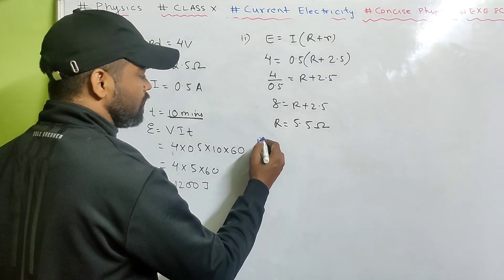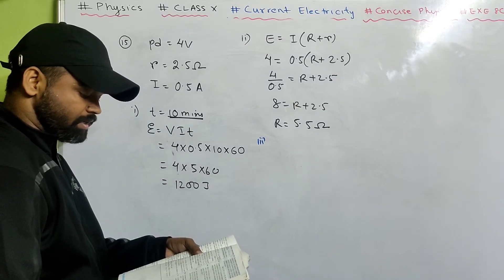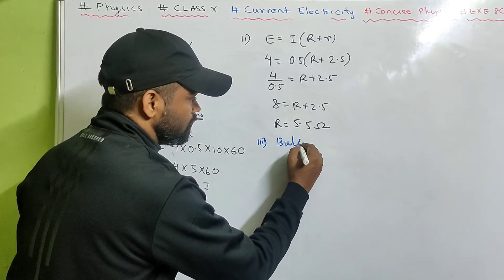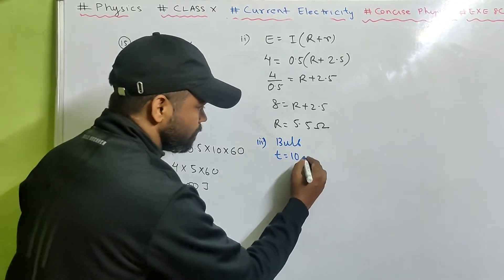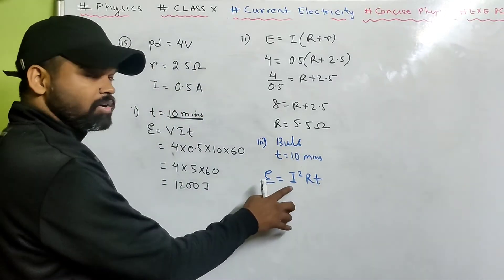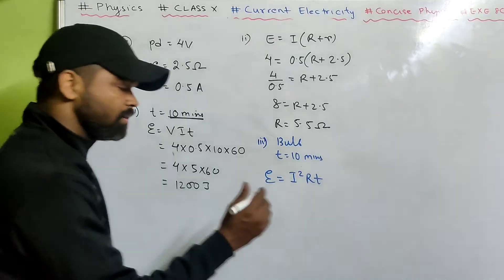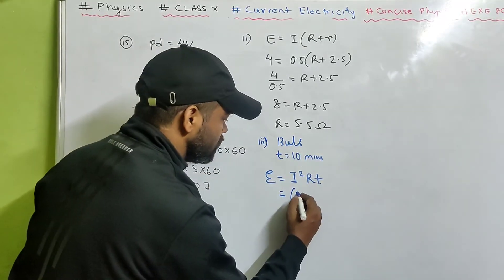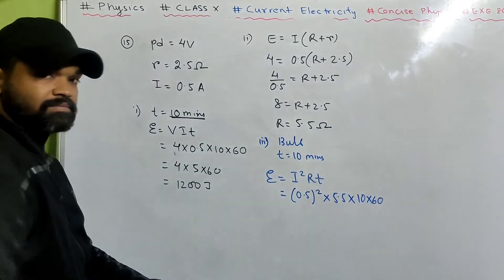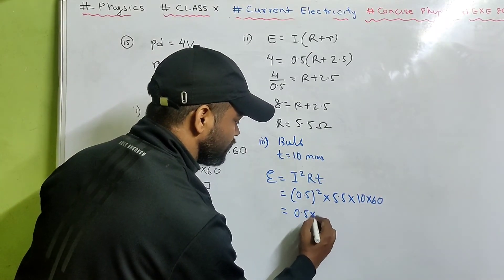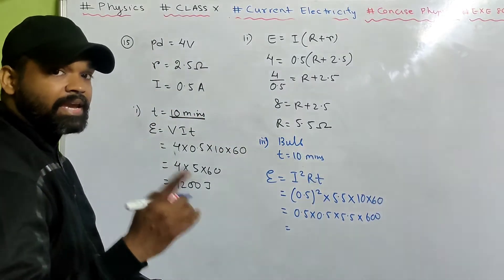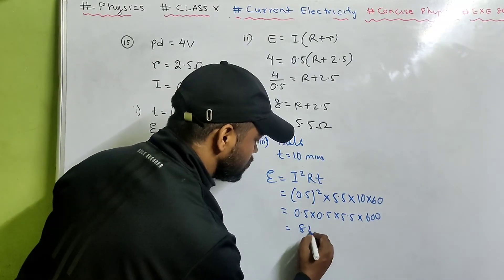Part 3 — energy dissipated in the bulb in 10 minutes: E equals I squared R T — 0.5 squared into 5.5 into 600 equals 0.25 into 5.5 into 600. Calculating this gives 825 joules. You can verify this is correct.